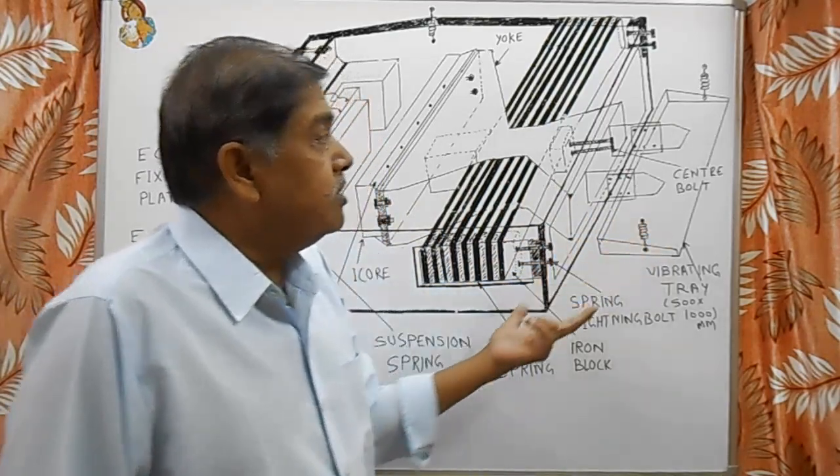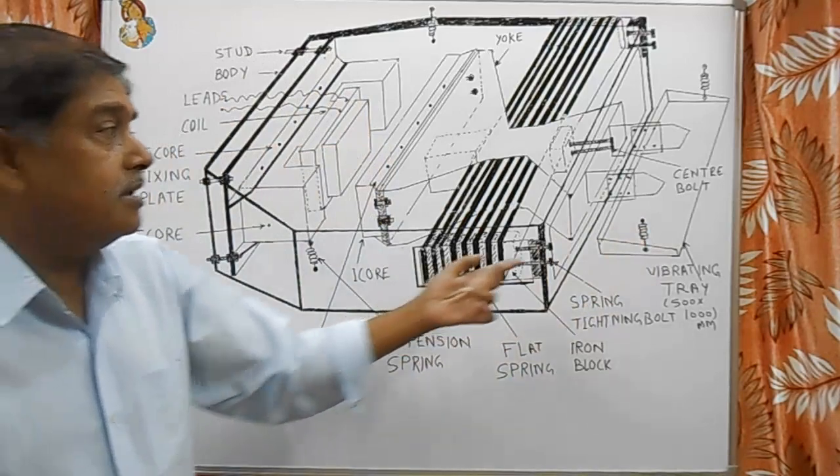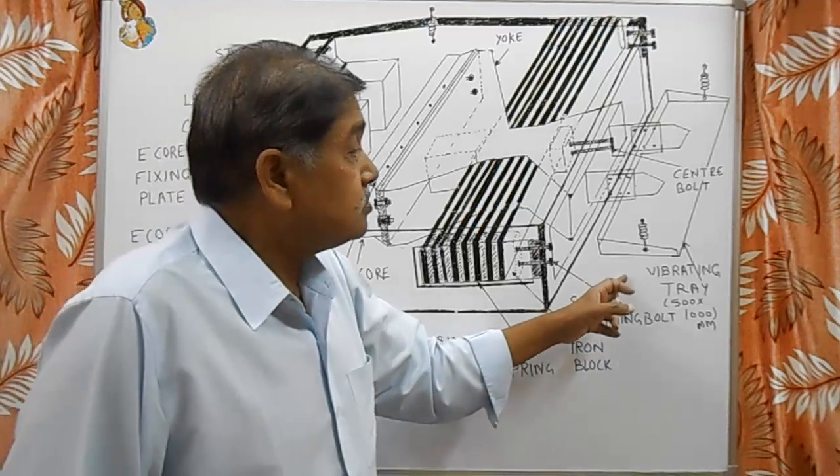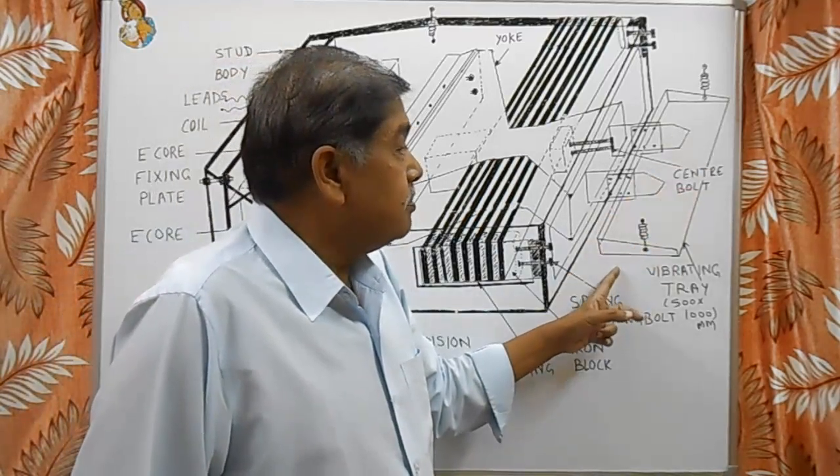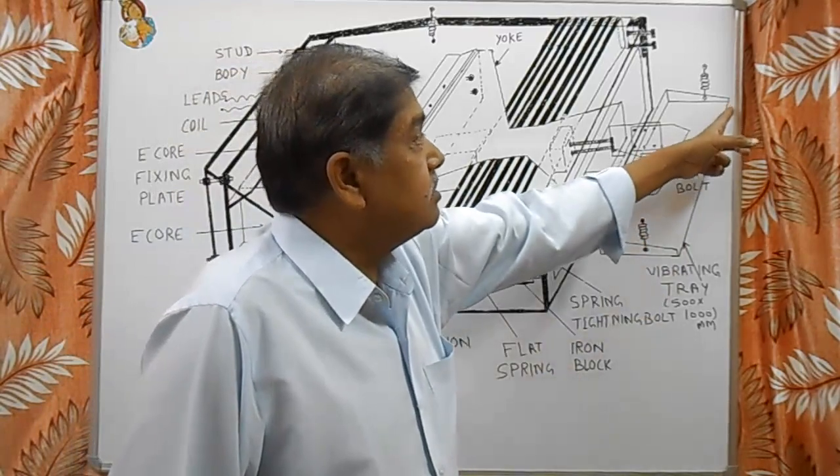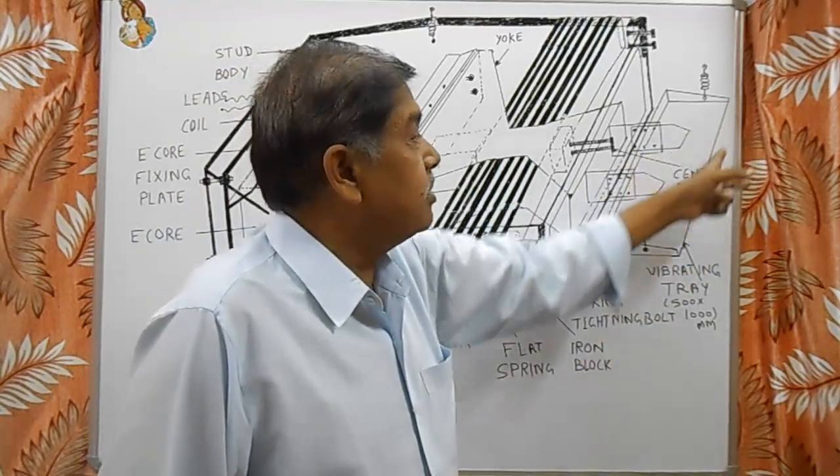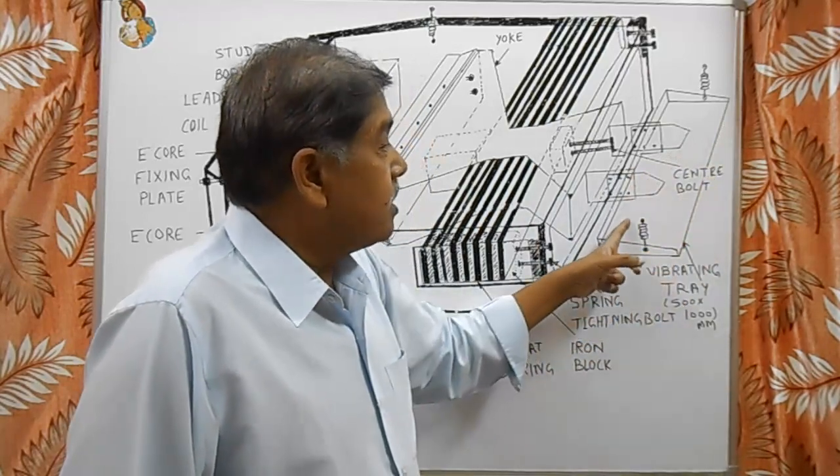Above the tray there is bulk material. With the vibration of this tray, the work material discharges to the conveyor belt. Here the size of the tray shown is smaller, but its size is 500 millimeter by 1000 millimeter. 500 is the width of this tray and 1000 is the length.